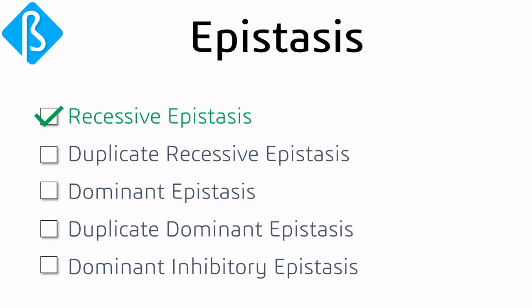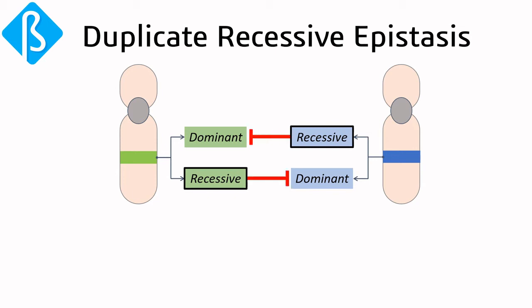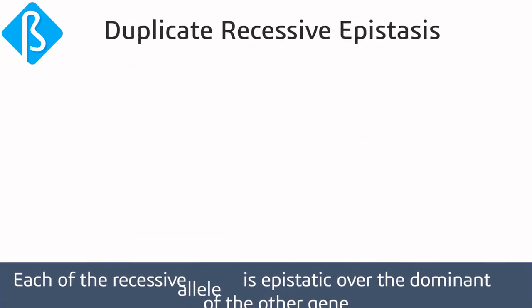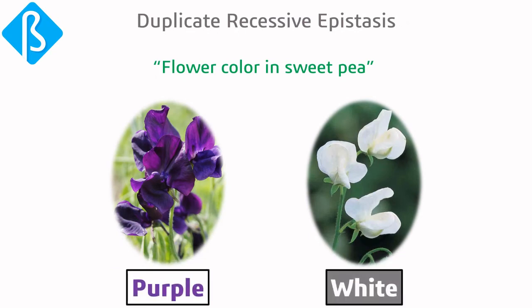Apart from recessive epistasis, there are other types of epistasis too. Let's consider the next one: duplicate recessive epistasis. Here, the recessive allele at either of the two loci can mask the expression of dominant alleles at the two loci. In other words, each of the recessive alleles is epistatic over the dominant allele of the other gene.